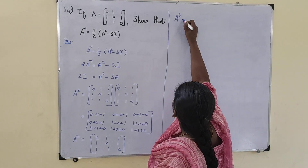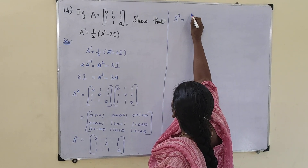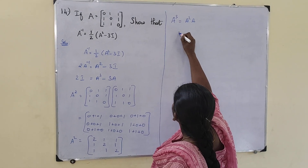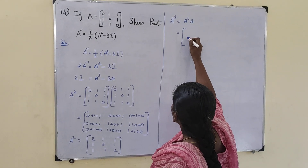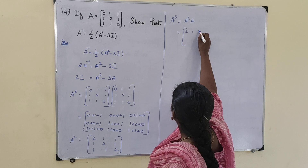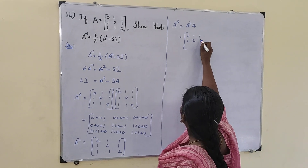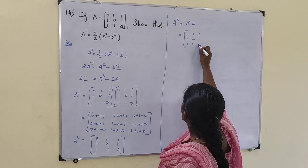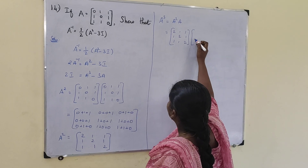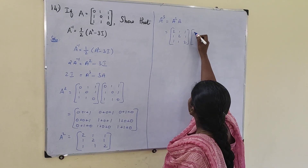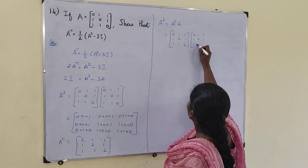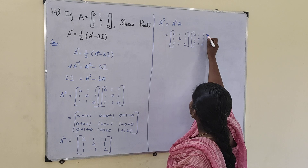Next we have to find A cube. A cube equals A square into A. A square is [2,1,1; 1,2,1; 1,1,2] multiplied into A matrix [0,1,1; 1,0,1; 1,1,0].